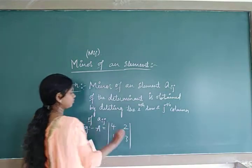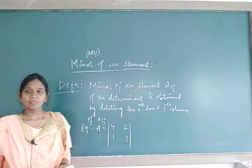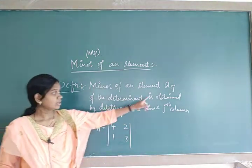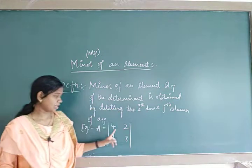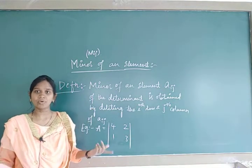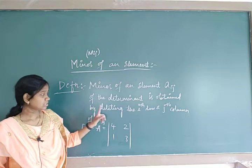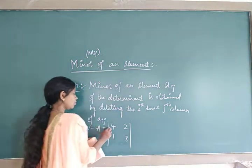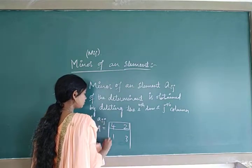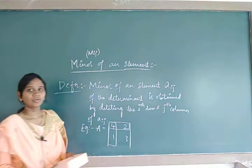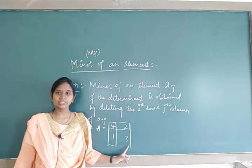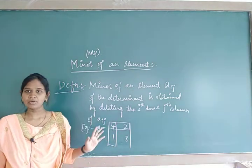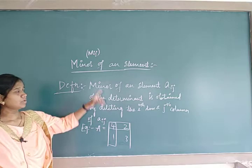Example: if A is the determinant with elements 4, 2, 1, 3, and I ask what is the minor of 4? According to the definition, take element 4 — it is present in the first row and first column. Delete that row and column. What is remaining? The minor of 4 is 3. This is about the minor of an element, and it is denoted by m_ij.